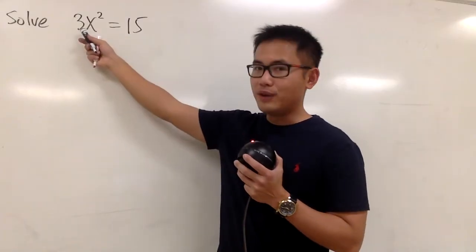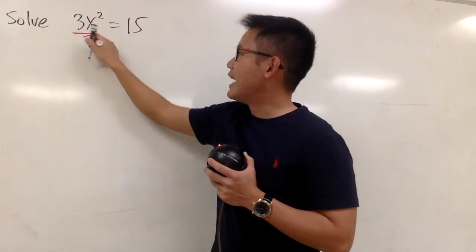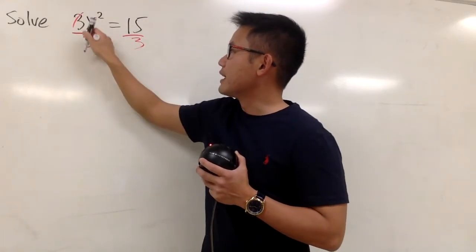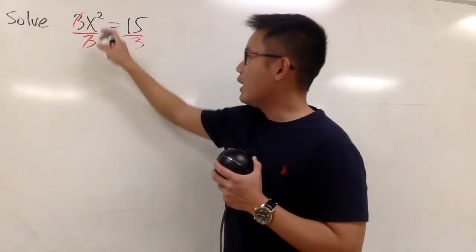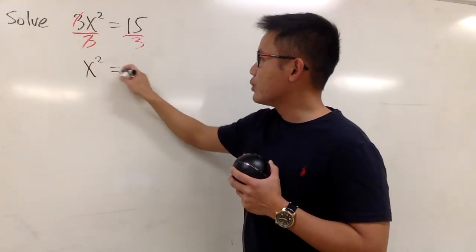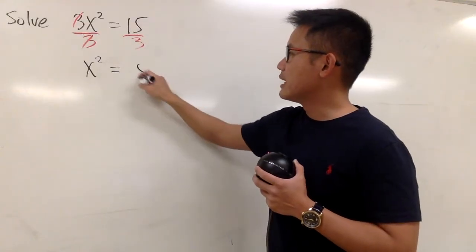First of all, we have to get rid of the 3 first, right? So let's divide both sides by 3, so they cancel. And then we will have the x squared on the left-hand side, and that's equal to 15 divided by 3, that's 5.